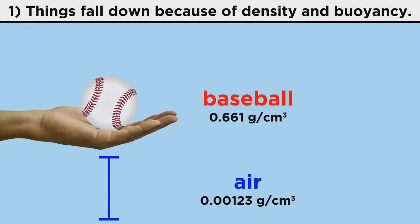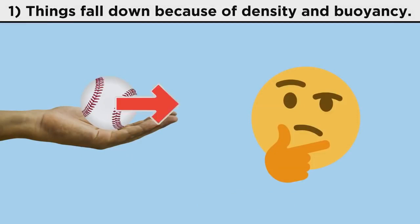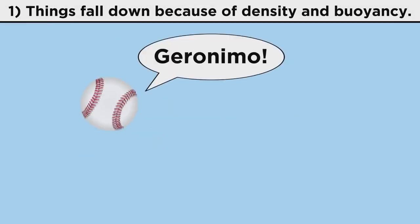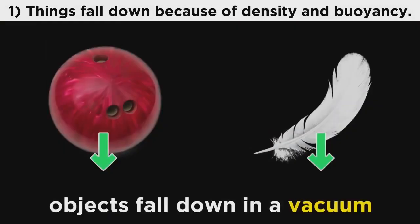You say that objects fall down because they are more dense than the air below them. Why down? Why not up? Or sideways? When you let go of a ball, there is air all around it. How does it know to fall down? Also, objects fall down when they are in a vacuum, which means there is no air below them. What's happening there?